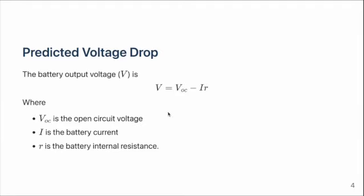We can write an equation for the battery's output voltage using the open circuit voltage, the battery current, and the internal resistance. The minus sign causes the battery voltage to decrease as the battery current increases.